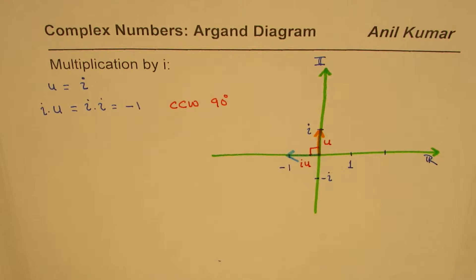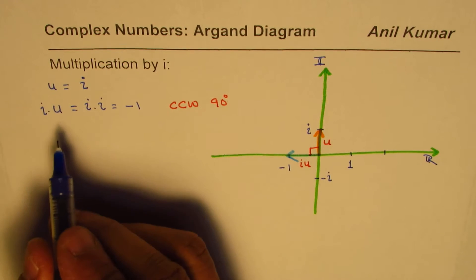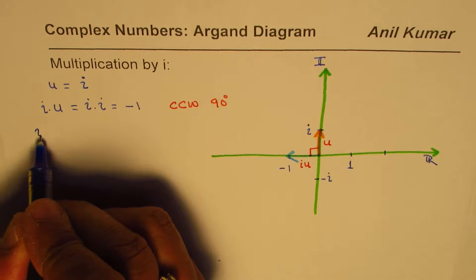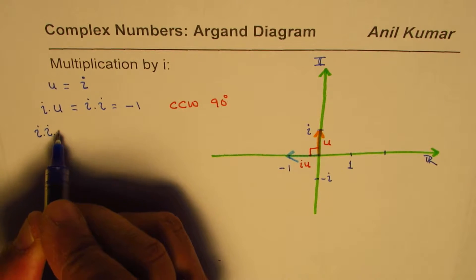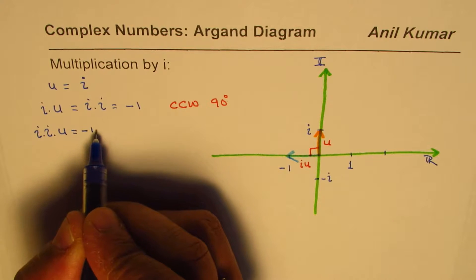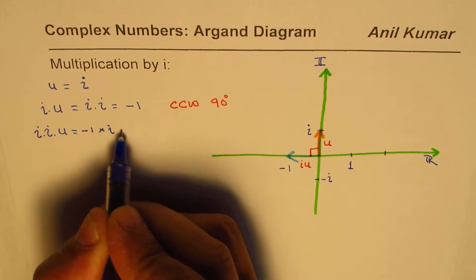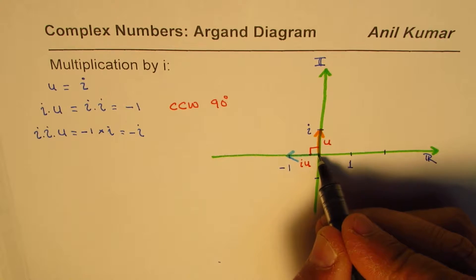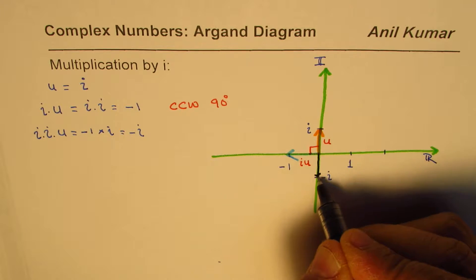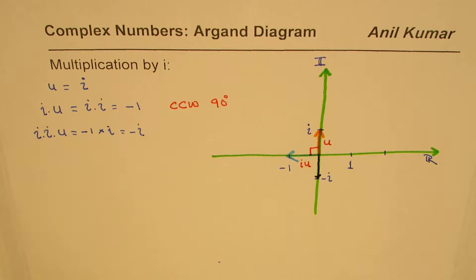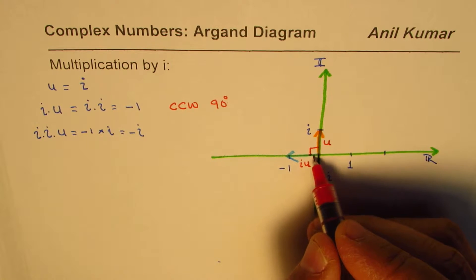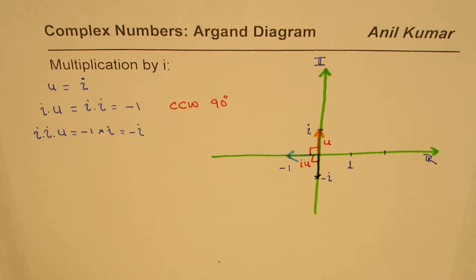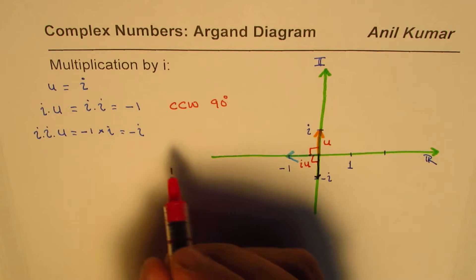Well, let us continue this process and see what happens when I next time multiply by i. So if I do i times i times u, it will be minus 1 times i or minus i. So minus i will, as you know, be shown like this. This is minus i. Again, what we observe here is that it is again rotated counterclockwise by another 90 degrees.